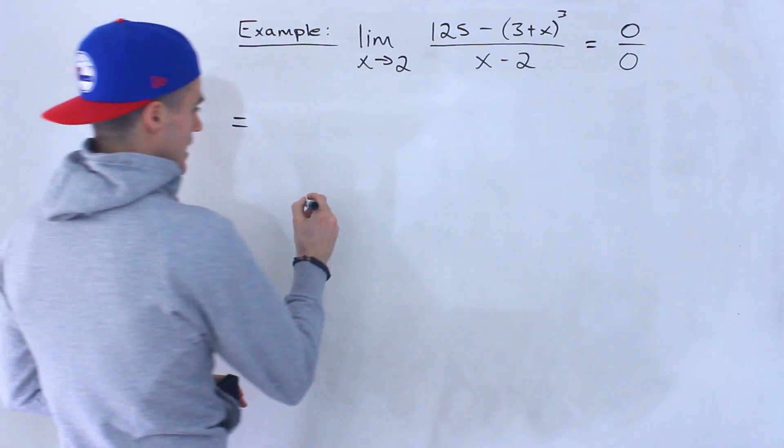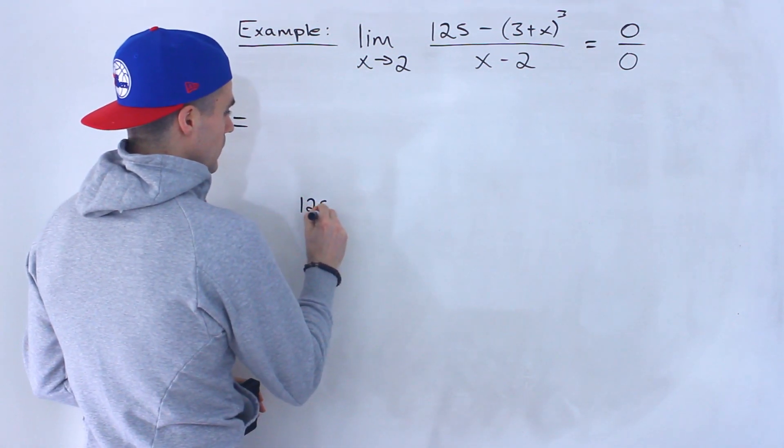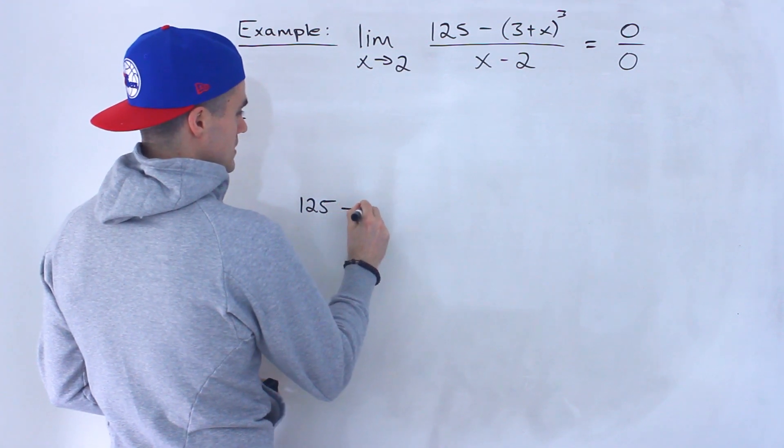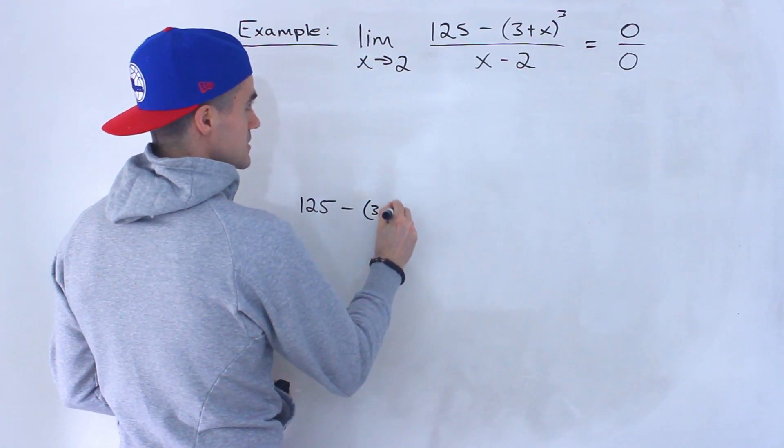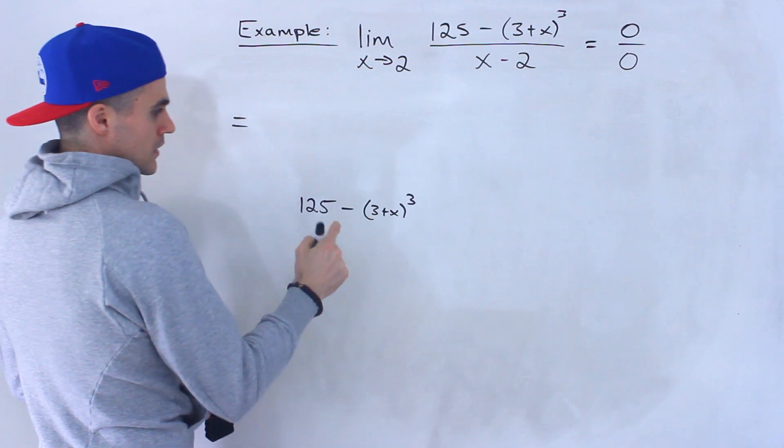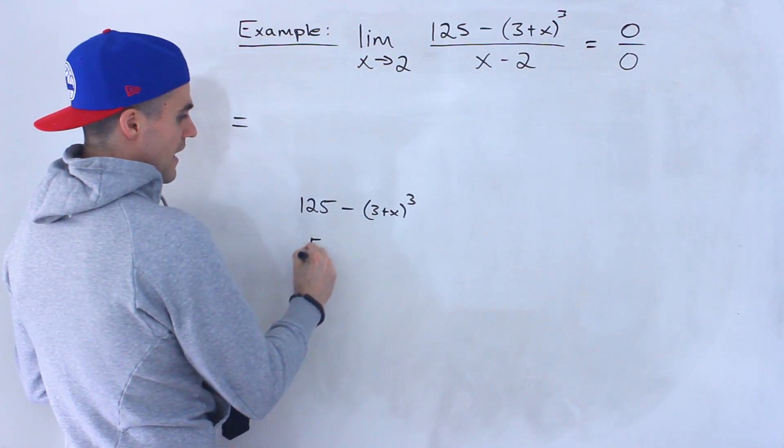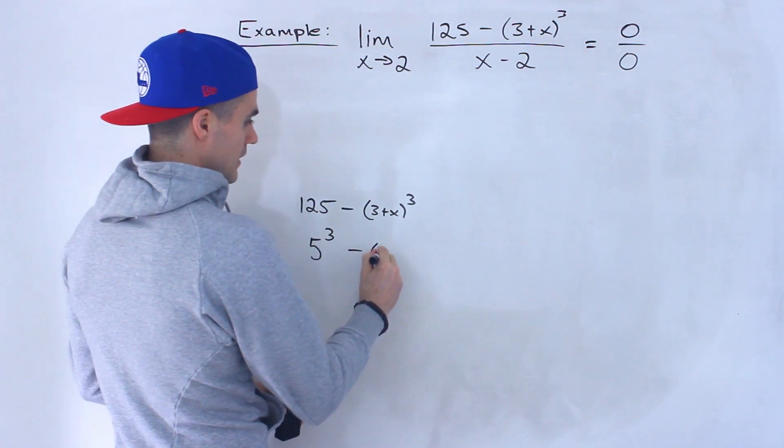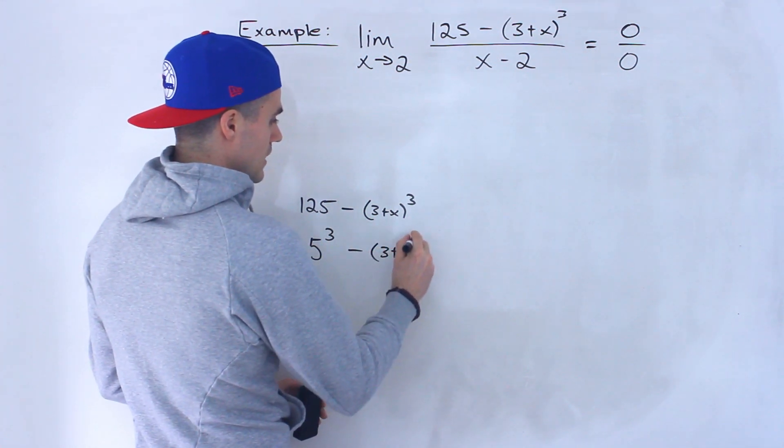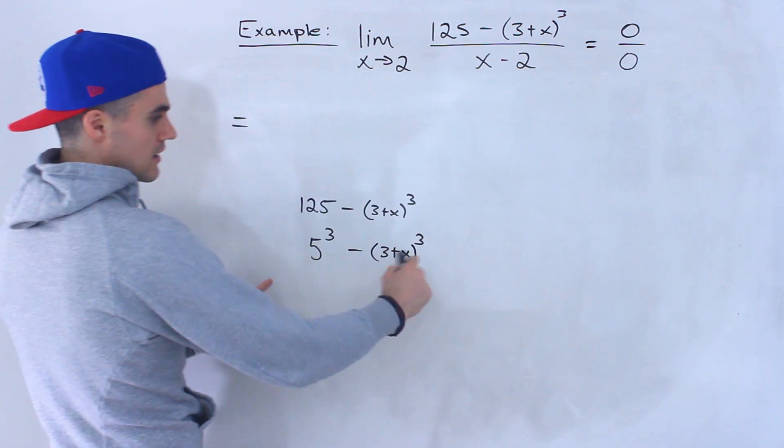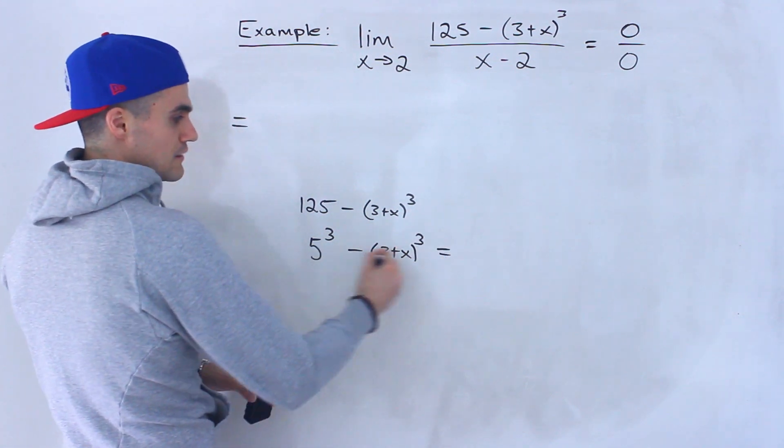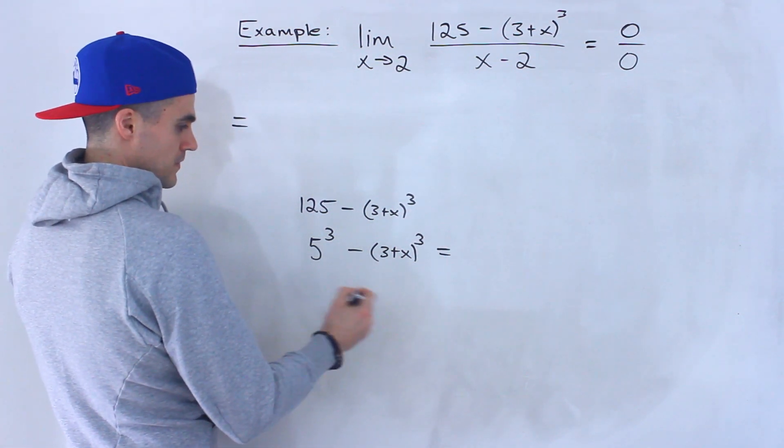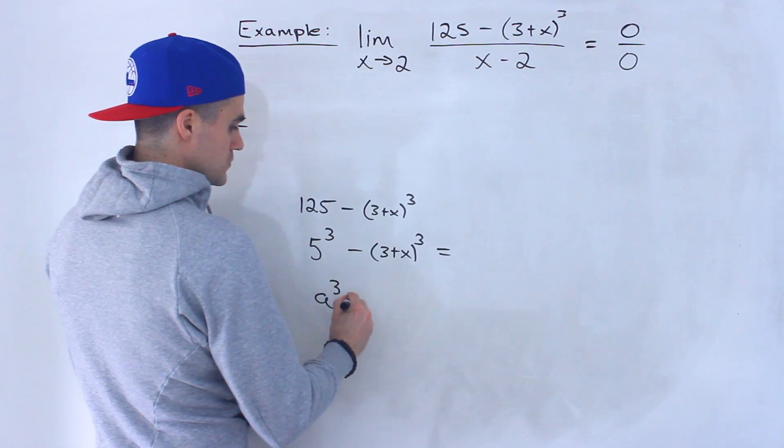Another way that you can do this is if you notice this 125 minus (3 plus x) to the power of 3, we could rewrite this as 5 to the power of 3, right? The third root of 125 is 5, minus (3 plus x) to the power of 3. And then notice that now this here is a difference of cubes. So remember, what's the difference of cubes formula?